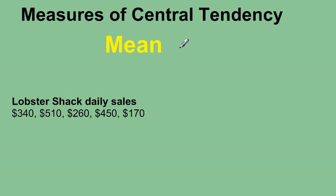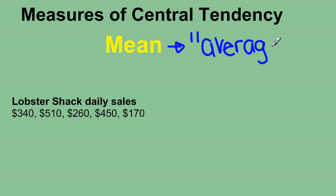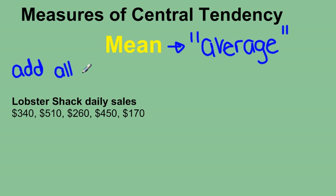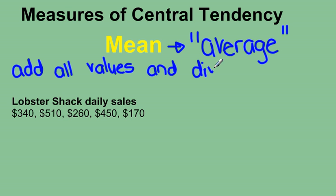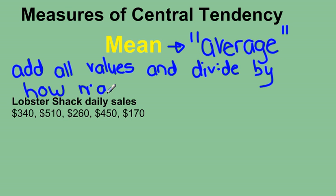Let's look at mean. You may have heard this as the term average. A lot of times we average our marks or students' heights in class. To find the average, we add up all the values and then divide by how many values there are.